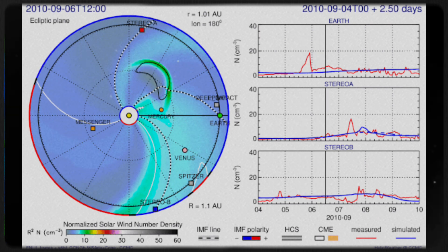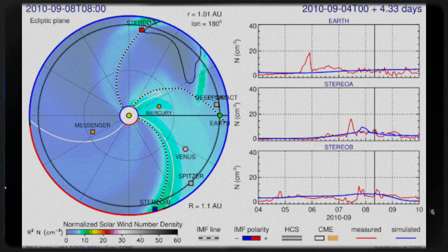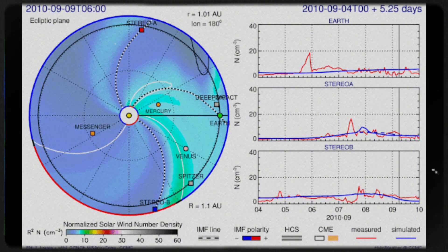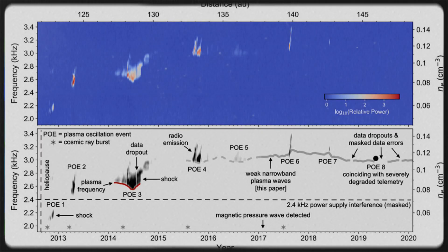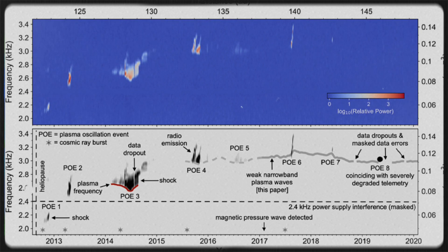However, it did not detect a change in the ambient magnetic field's direction. This was surprising because a change in the magnetic field direction was expected when transitioning from the Sun's influence to that of interstellar space. This unexpected result challenged prior assumptions and highlighted the complexities of the boundary region.